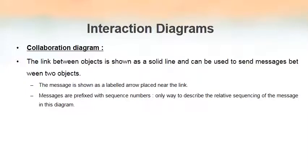When we draw the link between objects in a collaboration diagram, we use a solid line, and the same line can be used to indicate the message being passed between them. If the link includes a message, we write the message label just above the line or link between the objects.